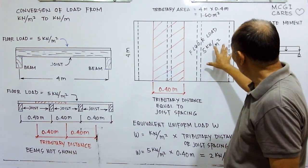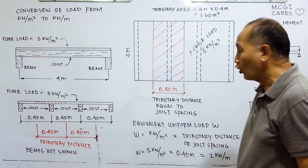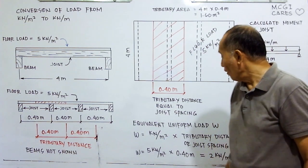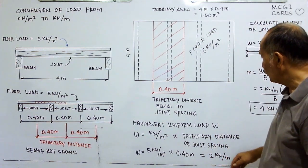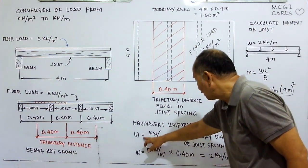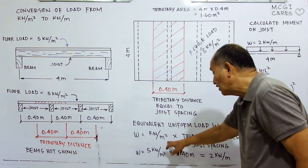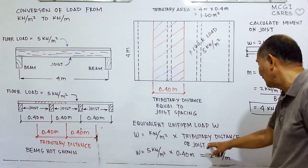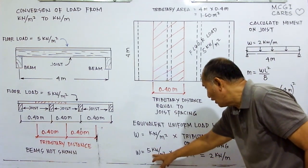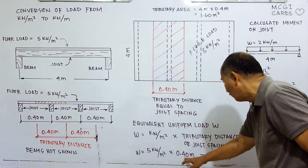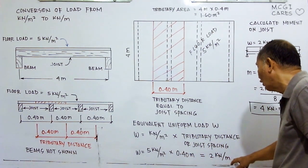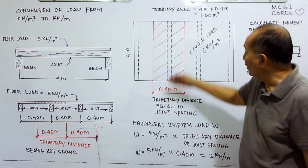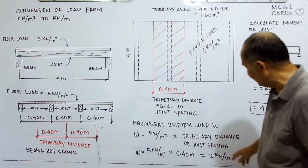We have five kilonewton per square meter throughout, and we want to convert that into its equivalent uniform load in kilonewton per meter. The formula is: w (kN/m) equals the load in kN/m² multiplied by the tributary distance. So five kilonewton per square meter multiplied by 0.4 meter gives two kilonewton per meter. That is the uniform load carried by this particular joist.